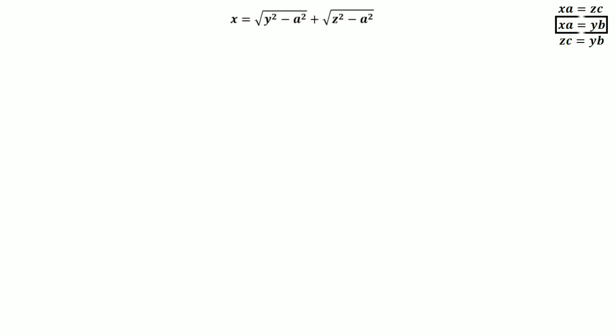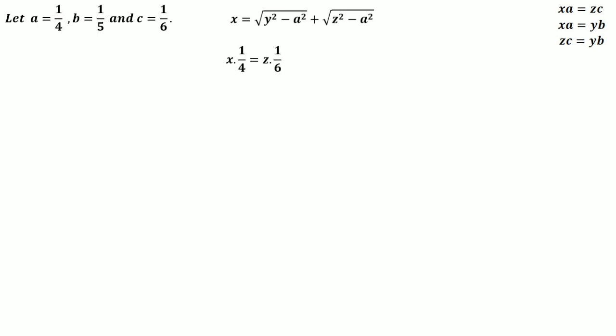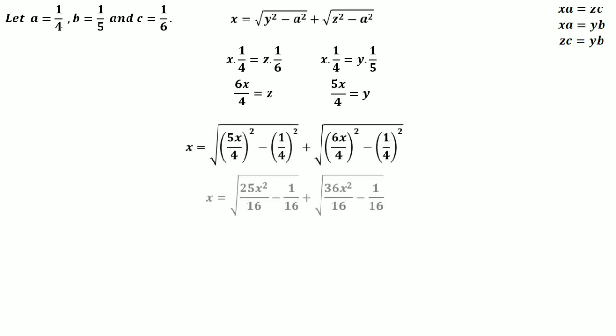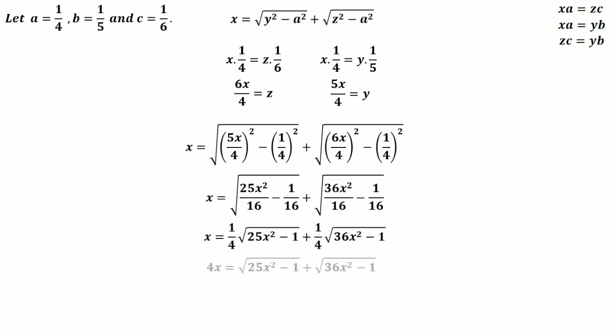Substituting a = 1/4, b = 1/5, c = 1/6 into our results: from x·(1/4) = z·(1/6) we get z = (3/2)x, and from x·(1/4) = y·(1/5) we get y = (5x/4)·(4/5) — simplifying, y = (5/4)x. Substituting these into the x equation and multiplying both sides by 4 gives: 4x = √(25x² − 1) + √(36x² − 1).